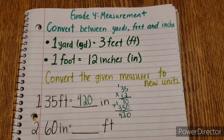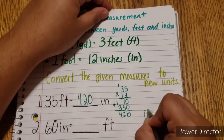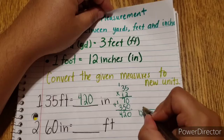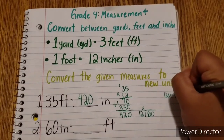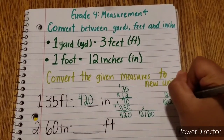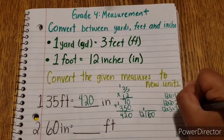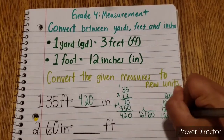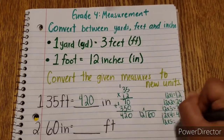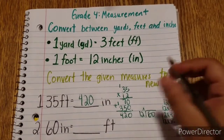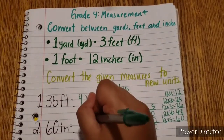Next we have 60 inches and want to go into feet. We do 60 divided by 12. Working through multiples of 12: 12×1=12, 12×2=24, 12×3=36, 12×4=48, 12×5=60. So 12 times 5 equals 60, and 60 minus 60 is 0. Therefore 60 inches equals 5 feet.